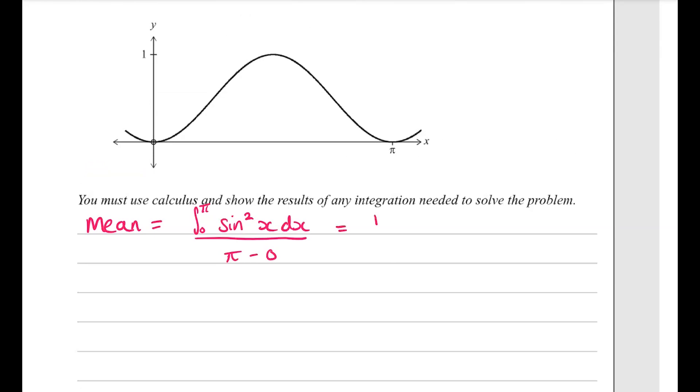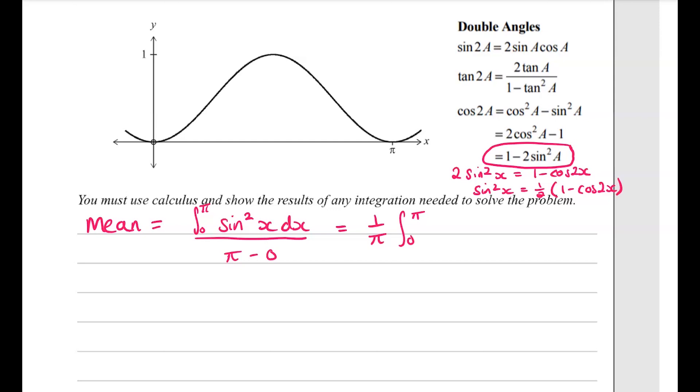For this we're going to need to integrate sine squared, which is not straightforward to integrate, but we can use the formula sheet to help us get something that is. So if we use these formulas here, we can use this one and rearrange it so that we've got sine squared is equal to half of 1 minus cos 2x, and that is something that we can integrate fairly straightforward.